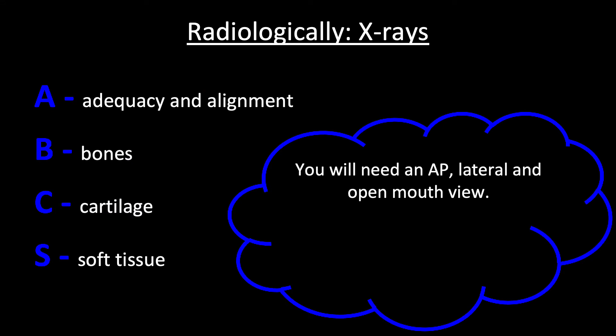If the C-spine cannot be cleared clinically, we move on to radiology and we use the mnemonic ABCs. A being adequacy and alignment of the C-spine, B the bones, C for cartilage — so the intervertebral discs — and S for soft tissue.